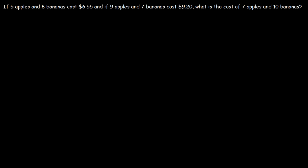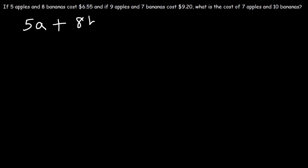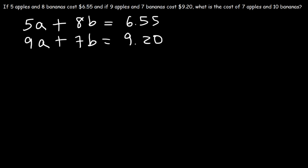If five apples and eight bananas cost $6.55, and nine apples and seven bananas cost $9.20, what is the cost of seven apples and ten bananas? We have two variables — let a represent apples and b represent bananas. We need two equations: 5a plus 8b equals 6.55, and 9a plus 7b equals 9.20. If we find the value of one apple and one banana, we can find the answer.